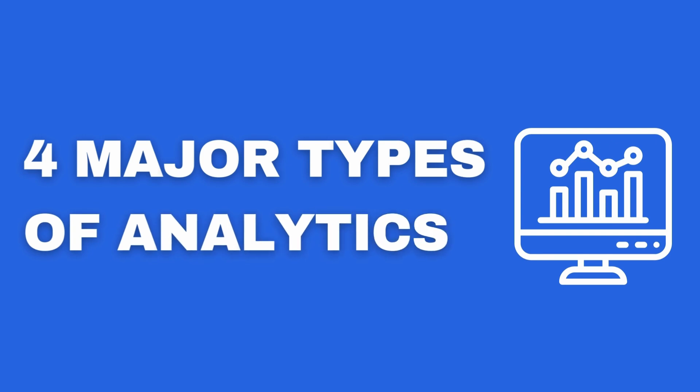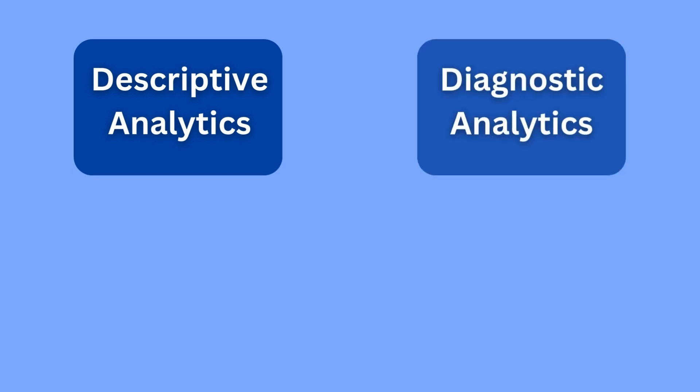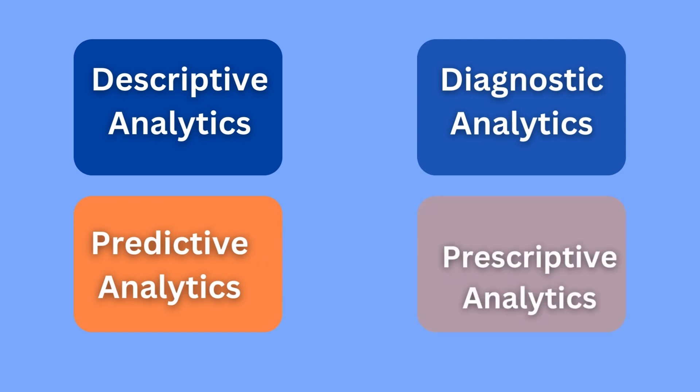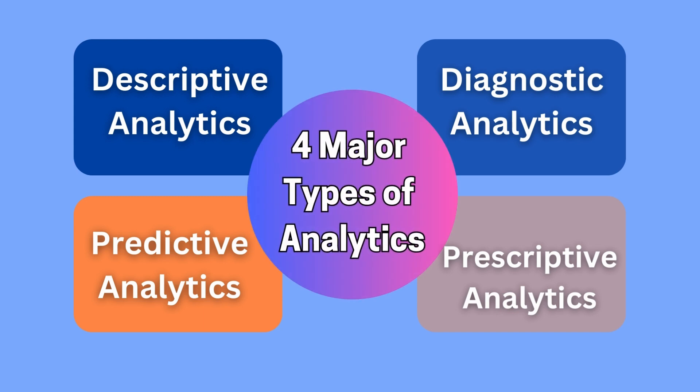Hello everyone, today I would like to explain the four major types of analytics. When we talk about data science and analytics, it's very broad, and it's helpful to really understand the four major types of things people refer to when talking about analytics. That can help you understand what to do at what time for your business, whether you are a business leader or a data scientist.